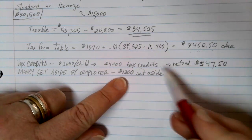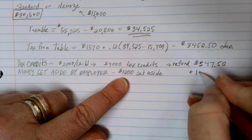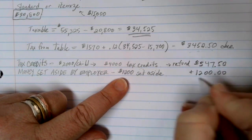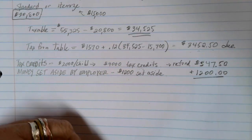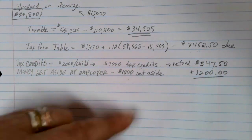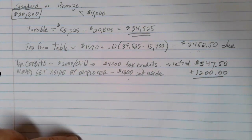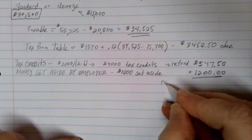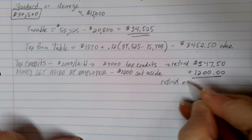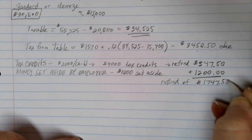Because Robbie doesn't owe anything after the tax credits are applied, they're going to get all twelve hundred dollars of the retirement withholding back as well. So the five hundred and forty seven dollars and fifty cent refund from the tax credits, plus getting back all twelve hundred dollars set aside by the employer, means Robbie should expect a total refund of one thousand seven hundred forty seven dollars and fifty cents.